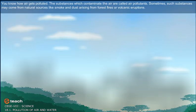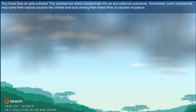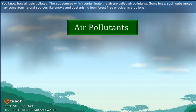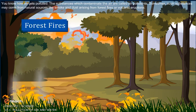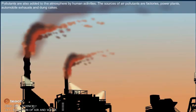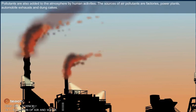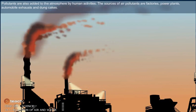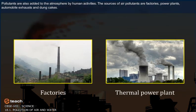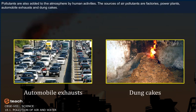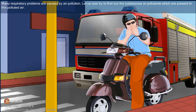The substances which contaminate the air are called air pollutants. Sometimes, such substances may come from natural sources like smoke and dust arising from forest fires or volcanic eruptions. Pollutants are also added to the atmosphere by human activities. The sources of air pollutants are factories, power plants, automobile exhausts and dung cakes. Many respiratory problems are caused by air pollution.